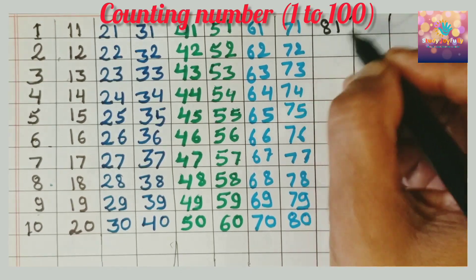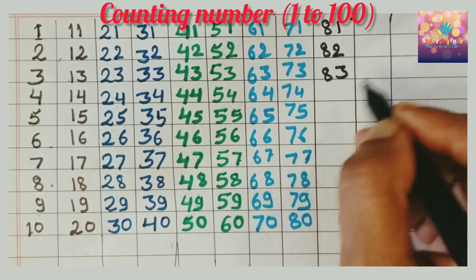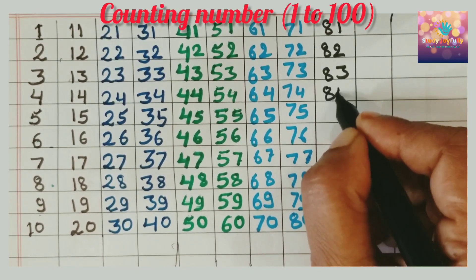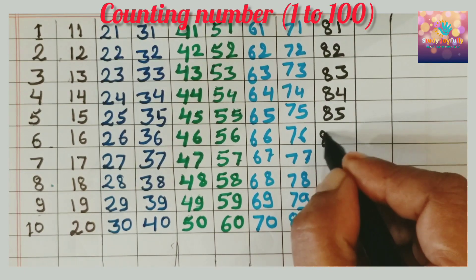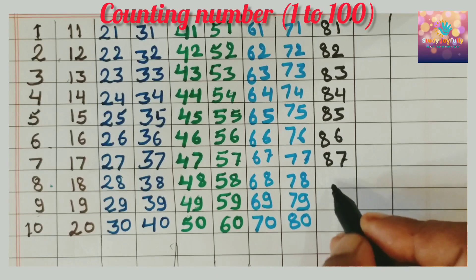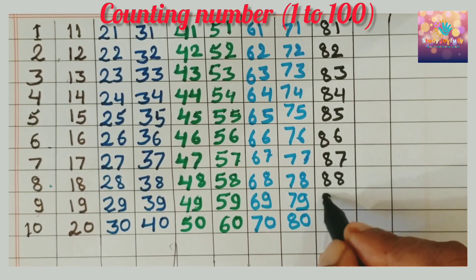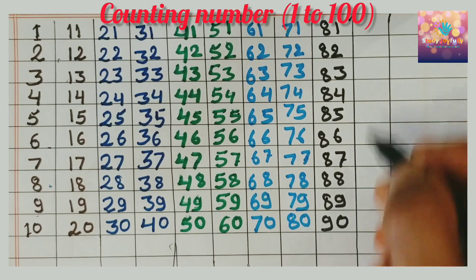8, 1, 81. 8, 2, 82. 8, 3, 83. 8, 4, 84. 8, 5, 85. 8, 6, 86. 8, 7, 87. 8, 8, 88. 8, 9, 89. 9, 0, 90.